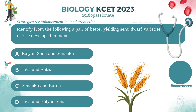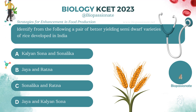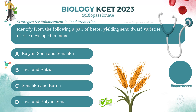Identify a pair of better-yielding semi-dwarf varieties of rice developed in India. Answer: Jaya and Ratna.